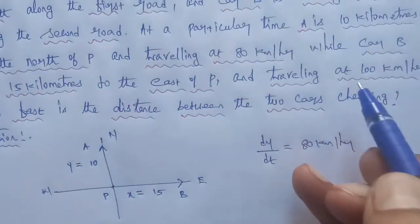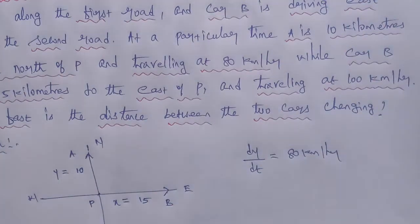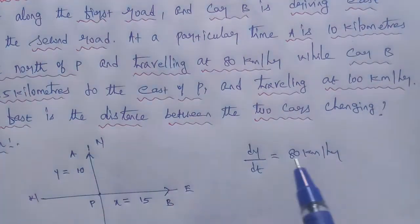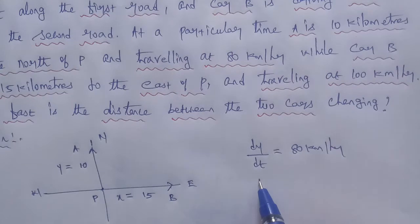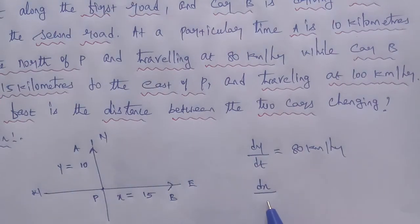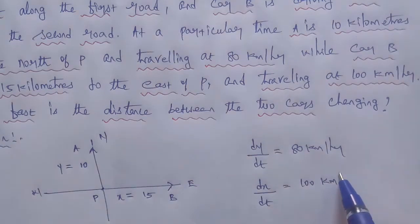Travelling at 100 km per hour. So speed dx by dt is equal to 100 km per hour.